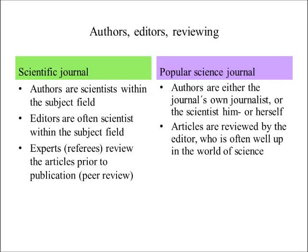The authors of a scientific journal are scientists within the subject field, and the editors are often scientists within the subject field as well. Experts, so-called referees, review the articles prior to publication — so-called peer review. The authors of a popular science journal are either the journal's own journalists or the scientist him or herself, and the articles are reviewed by the editor, who is often well up in the world of science.